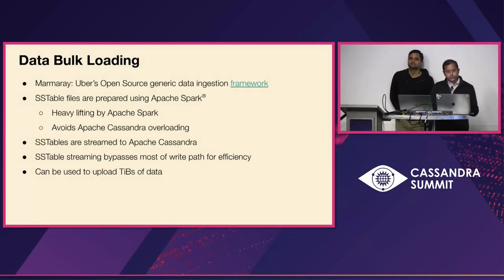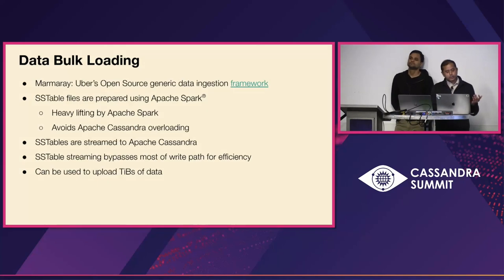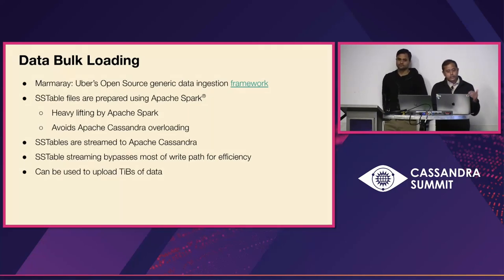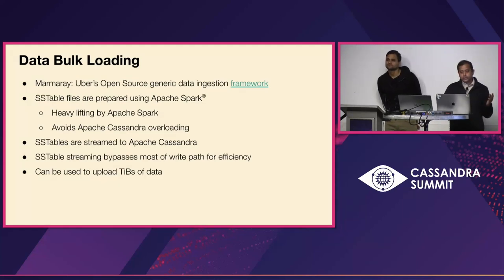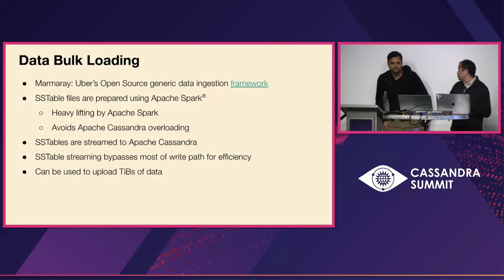One prominent feature is data bulk uploading. We use Cassandra for a feature store for machine learning — petabytes of data refreshed on a daily basis. Our ML platform, Michelangelo, uploads data to Cassandra using bulk upload: new SSTables are prepared offline using Apache Spark, then streamed to Cassandra using the storage port. For Cassandra nodes, these SSTable streams are similar to inter-node streaming. The Marmot framework is used for managing bulk uploads, and Uber has open-sourced the Marmot framework.